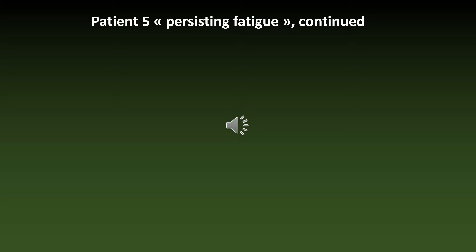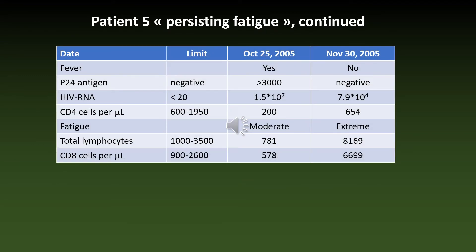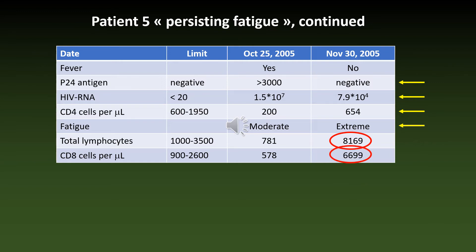However, instead of feeling better, this patient felt worse and he was re-evaluated five weeks later on November 30th. As expected, his P24 antigen had disappeared and the HIV RNA had declined, and the CD4 count had improved — but he was extremely fatigued and unable to work. His blood count was puzzling, with an increase in lymphocytes from a subnormal 781 — lymphopenia is typical for PHI — to more than 8,000, with CD8 lymphocytes predominating.